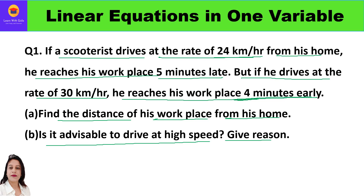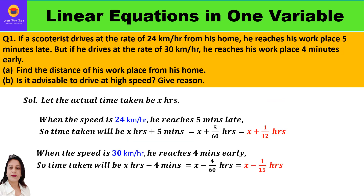Let us assume that the normal time taken by this scooterist is x hours. When he is moving at a speed of 24 kilometers per hour, he reaches five minutes late, meaning he takes five minutes more than the actual time. So time taken is x hours plus five minutes. Converting five minutes to hours by dividing by 60, we get x plus 1/12 hours.